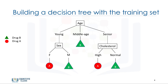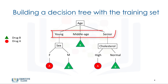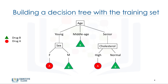As mentioned, we want to prescribe a drug to a new patient, but the decision to choose drug A or B will be influenced by the patient's situation. We start with age, which can be young, middle-aged, or senior. If the patient is middle-aged, then we'll definitely go for drug B.